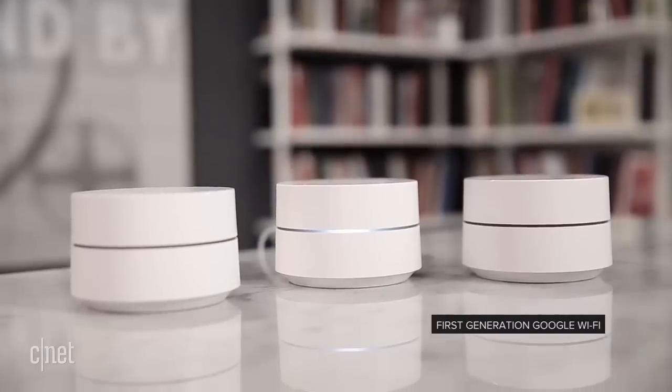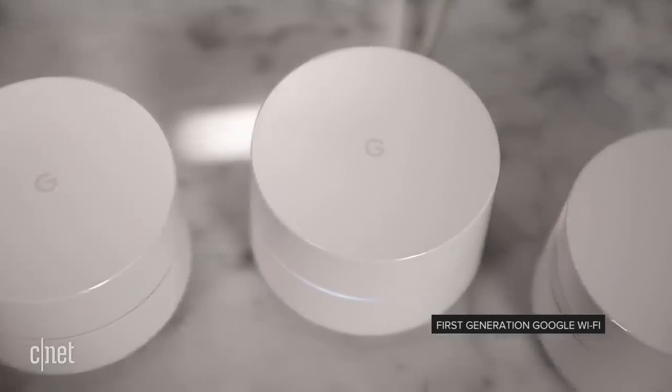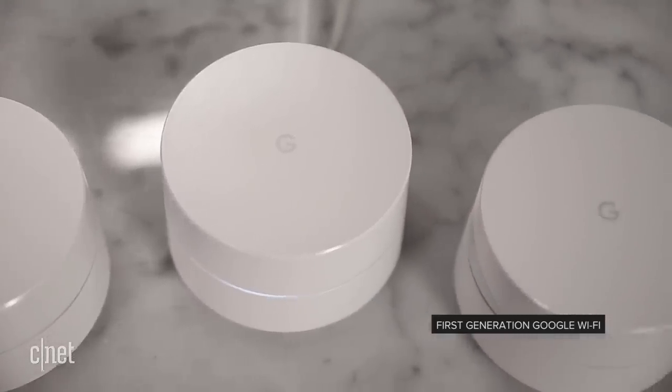Google also tells us that the new Nest Wi-Fi system is totally backwards compatible with the existing Google Wi-Fi system. So if you already have that first-gen Google Wi-Fi setup in your home, you can just get a single one of these extenders—these Nest Points—and connect it with your existing system. You don't need the new router.